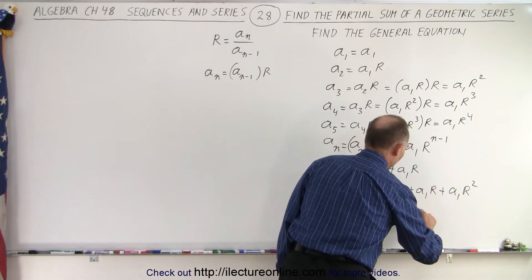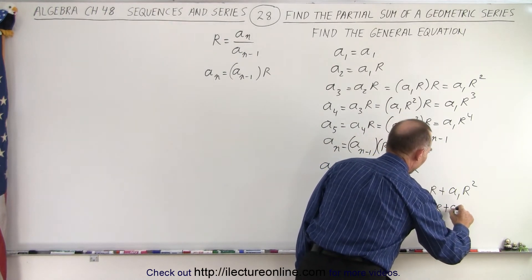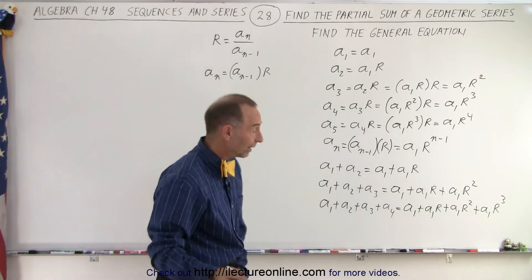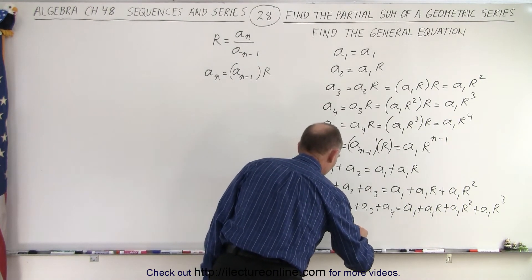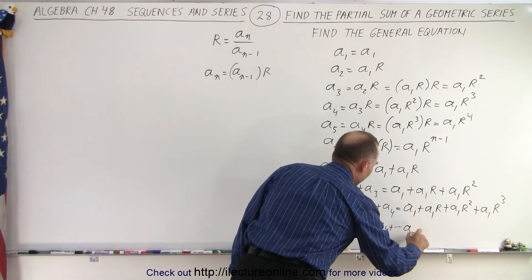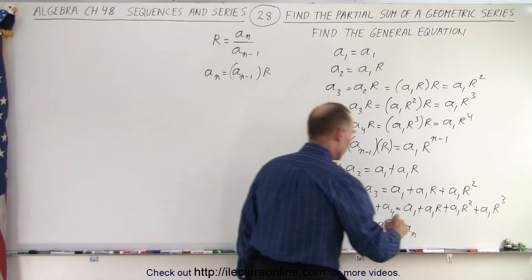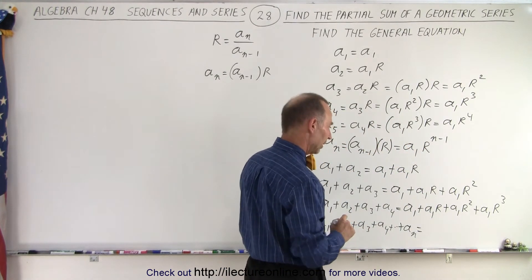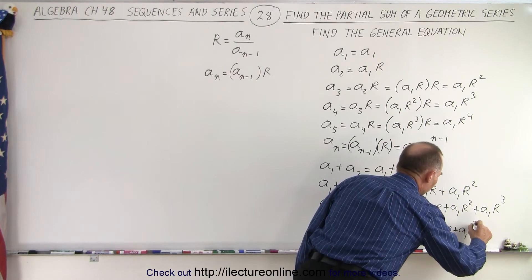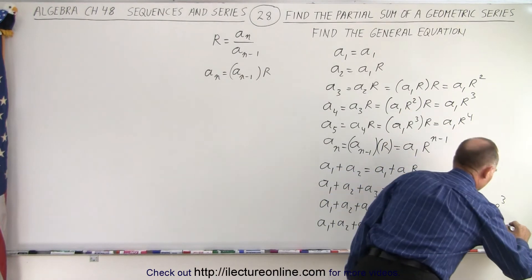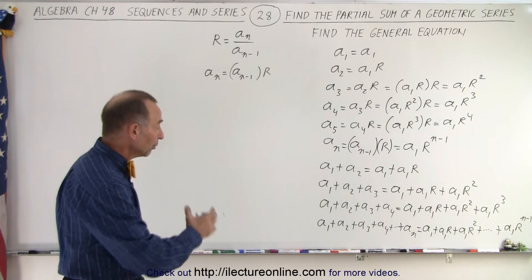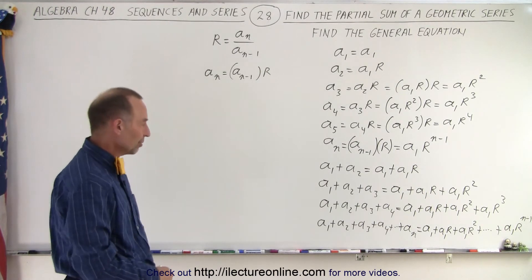And a sub 1 plus a sub 2 plus a sub 3 plus a sub 4 is going to be equal to a sub 1 plus a sub 1 R plus a sub 1 R squared plus a sub 1 R cubed. In general, the sum continues up to a sub 1 times R to the n minus 1. That is how we sum up the first so many terms of a geometric series.